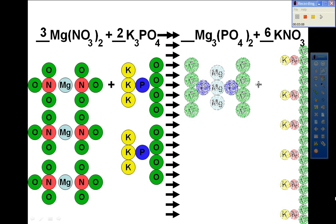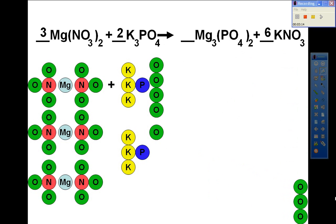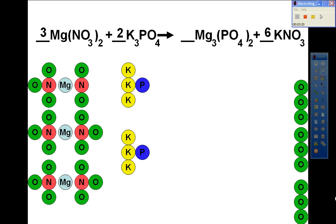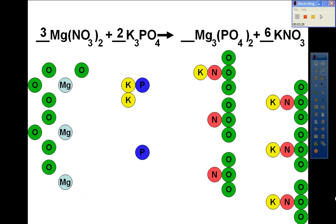And then we can remove the molecules on the right side and rearrange the molecules from the left into the molecules on the right. I'm going to speed that up. And there are our six KNO3s, and then our magnesiums.